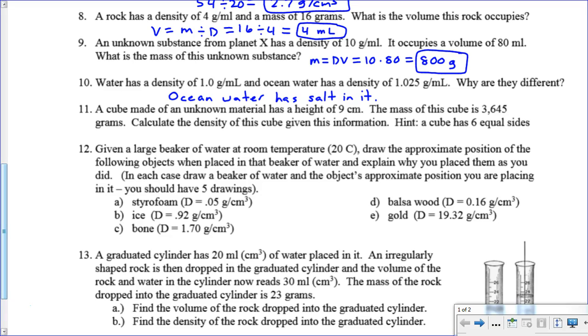Going on to 11, we've got a cube made of an unknown material. It's 9 centimeters high. The mass of the cube is 3,645 grams, calculate the density. To do this, we need to figure out what 9 times 9 times 9 would be. That is 729. Then if we take the mass and divide it by the volume, we'll get the density. So mass is 3,645 divided by the volume, which is 729. That actually turns out really nice. It is 5 grams per centimeter cubed.